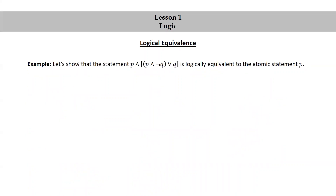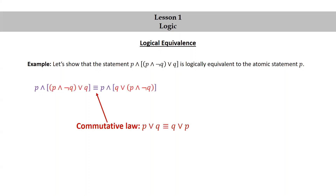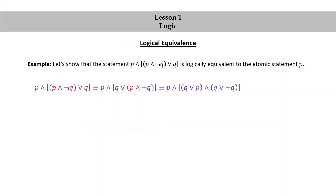Let's do an example. Let's show that the statement p∧(p∧¬q)∨q is logically equivalent to the atomic statement p. We start with p∧(p∧¬q)∨q and first use a commutative law to interchange p and ¬q with q. We then use a distributive law to rewrite q∨(p∧¬q) as (q∨p)∧(q∨¬q). We then use a negation law to rewrite q∨¬q as true.